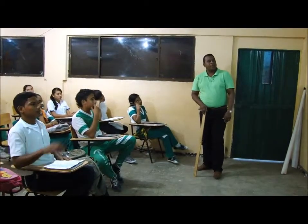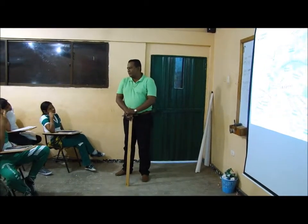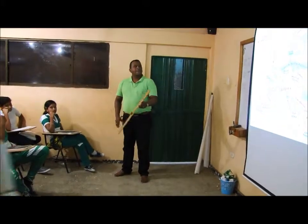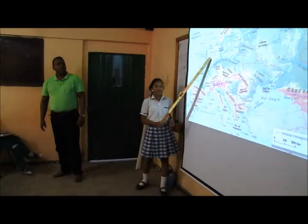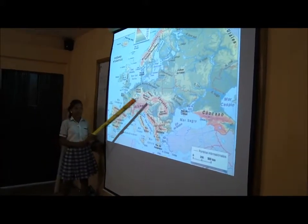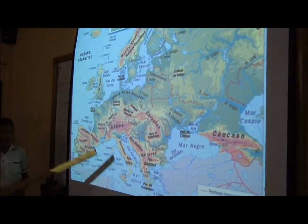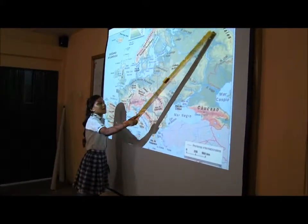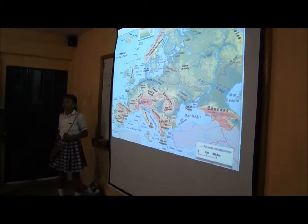Vamos a ver la ubicación astronómica de dicho continente. Latitudinalmente, Europa se encuentra ubicada en el hemisferio norte, y longitudinalmente la mayor parte de su tierra se encuentra ubicada en el hemisferio oriental. Europa se extiende desde el Cabo Norte con 71 grados de latitud norte hasta el Cabo Matapán con 36 grados de latitud norte. Desde los Montes Urales con 60 grados de longitud oriental hasta el Cabo Roca con 9 grados de longitud occidental.